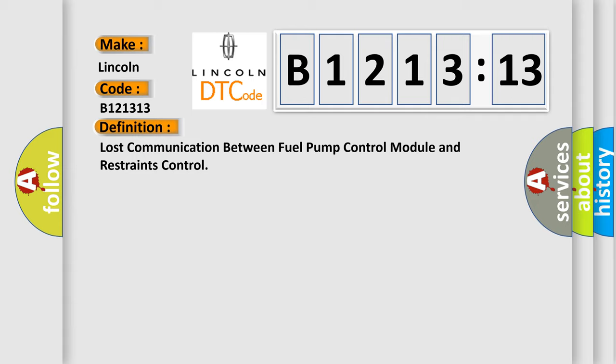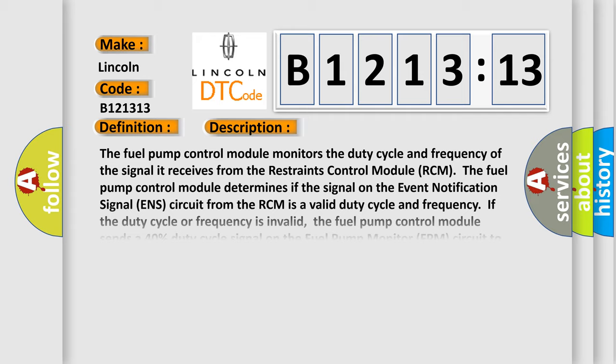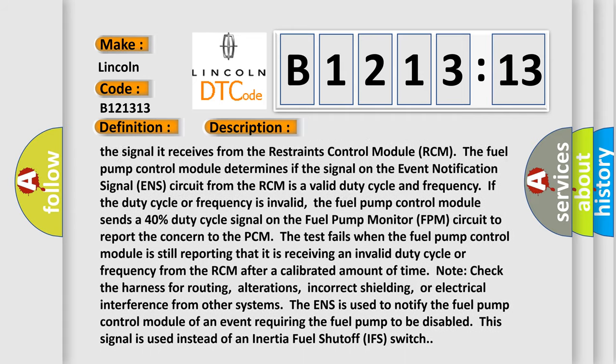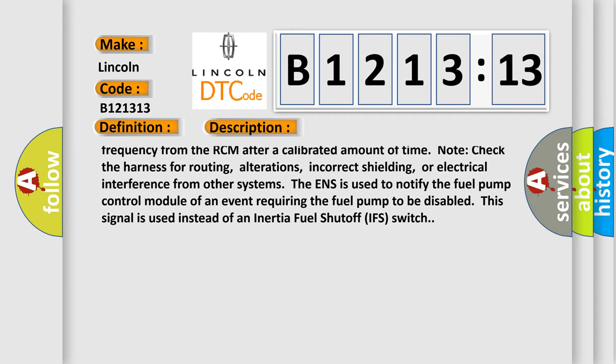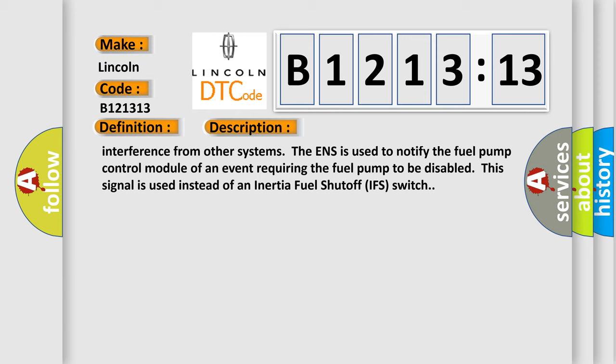Note: check the harness for routing, alterations, incorrect shielding, or electrical interference from other systems. The ENS is used to notify the fuel pump control module of an event requiring the fuel pump to be disabled. This signal is used instead of an inertia fuel shutoff IFS switch.